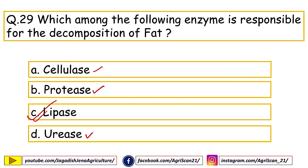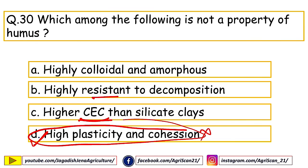Next question: which among the following is NOT a property of humus? Options are highly colloidal and amorphous, highly resistant to decomposition, higher CEC than silicate clays, high plasticity and cohesion. The right answer is high plasticity and cohesion — this is a wrong statement. Humus has very low plasticity and low cohesion. CEC is generally higher than silicate clays, it is resistant to decomposition as it is a final resistant product, and it is highly colloidal and amorphous.